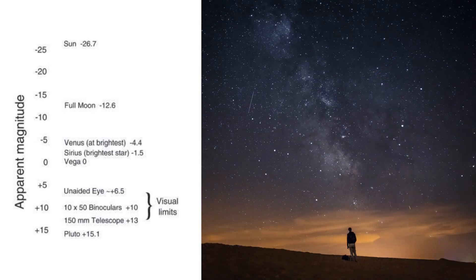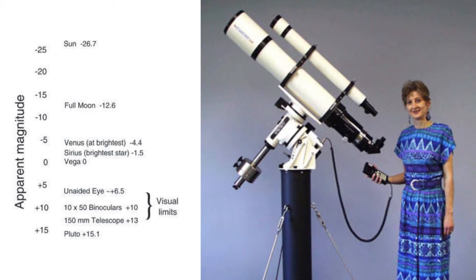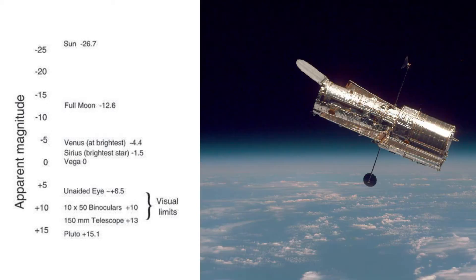Most objects in our night sky visible without a telescope have a brightness between 0 and 6. If we use a 150-millimeter telescope we can observe objects up to magnitude 13. Using the Hubble Space Telescope we can observe stars with magnitude up to 31.5.